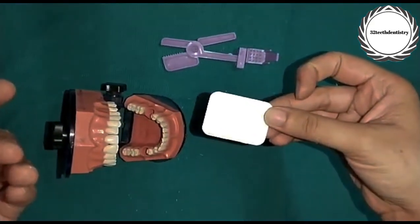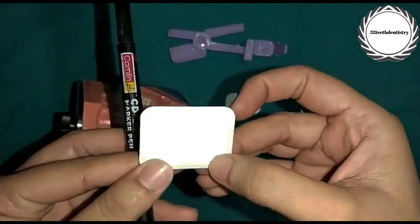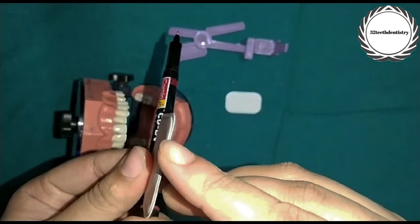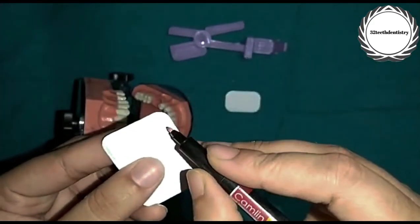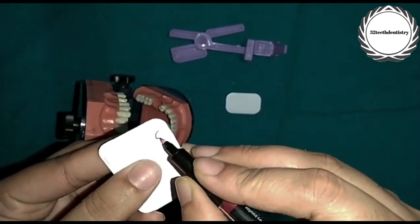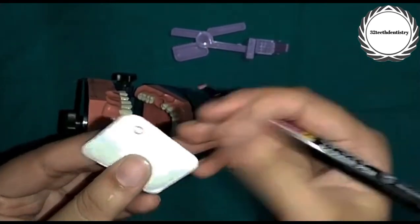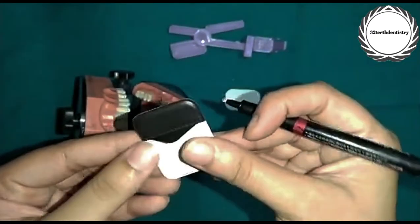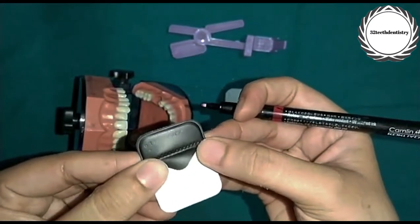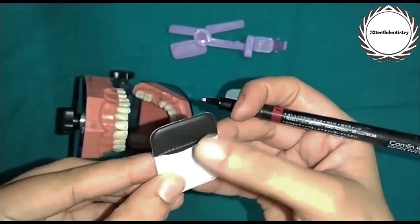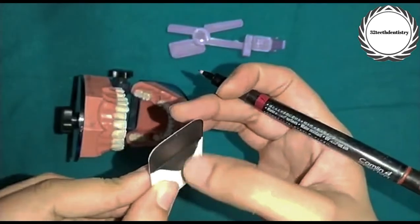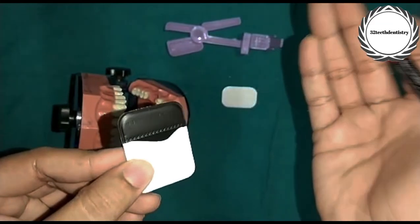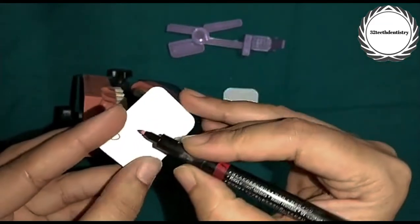The first thing is our IOPA film which we normally use. On its side you can see the embossed dot. Now when someone starts with a patient, you mark this embossed dot. This is the white surface we always keep on the side of the tube, and this is the back surface.